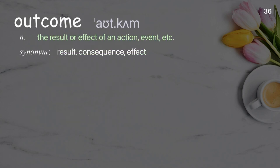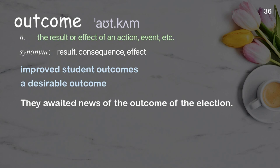Outcome: the result or effect of an action, event, etc. Examples: Improved student outcomes. A desirable outcome. They awaited news of the outcome of the election.